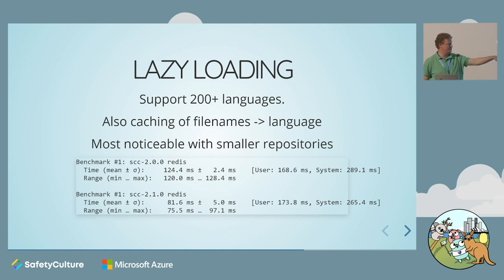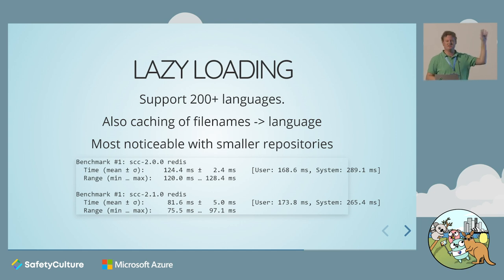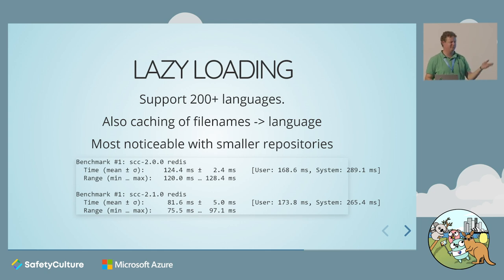This is most noticeable with smaller repositories. Here's an example for Redis — it saves 40 milliseconds in this particular run. All these benchmarks are run on different machines at different times, so don't pay too much attention to the absolute numbers, just notice the numbers changing.